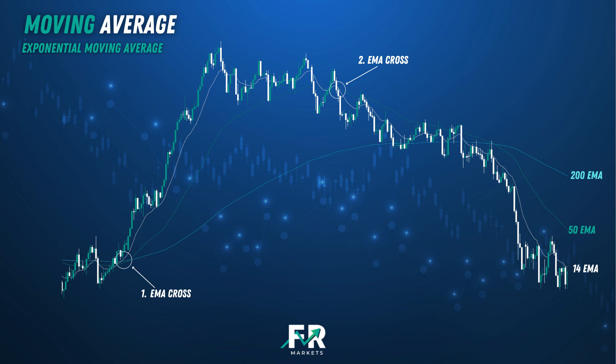We then saw price move up and then another EMA crossover happened at the top — we could have entered a sell trade there and price moved down. It's really that simple: just wait for these lines to cross to know when to trade.